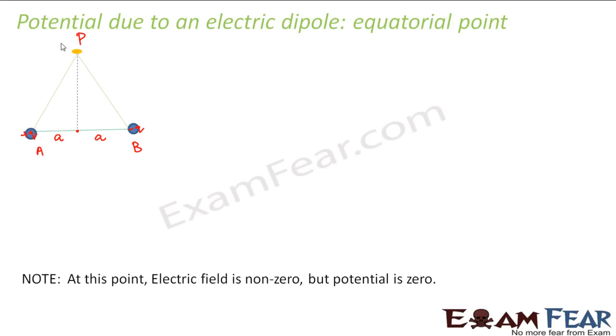So let us join these two lines. We will calculate the potential. Here also we will do the same thing: we will first calculate the potential at P due to A, then we will calculate the potential at P due to B.